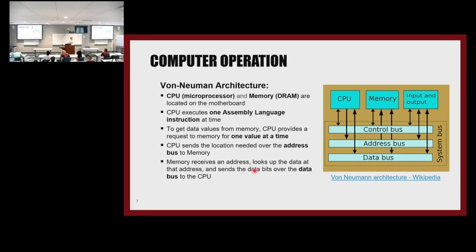This is exactly where the bottleneck is in today's machine learning architectures. When we have a data-intensive application, we have to keep going back and forth between processor and memory. That's where the idea of in-memory computing architectures comes in — doing computation where the data exists — rather than constantly transferring it back and forth.